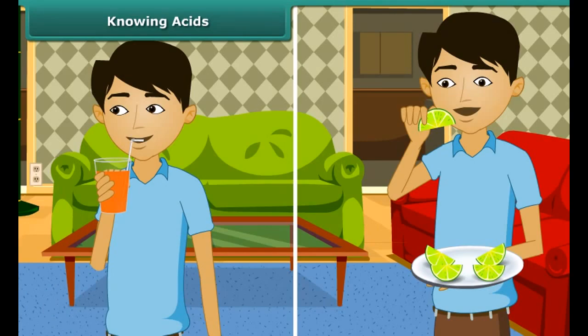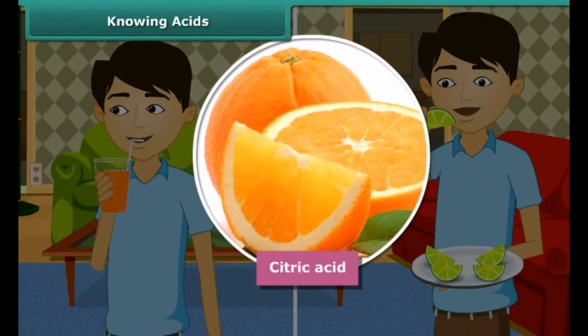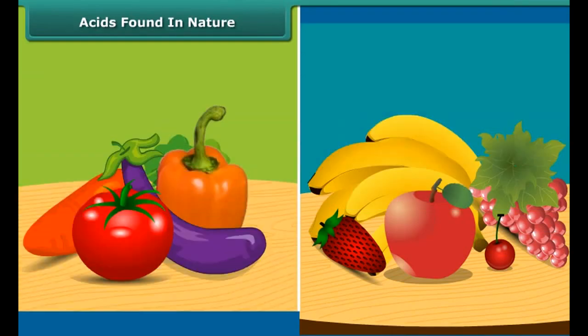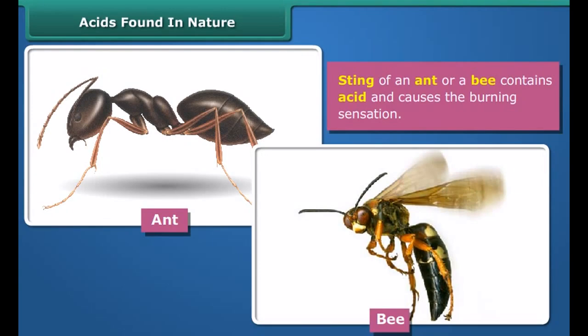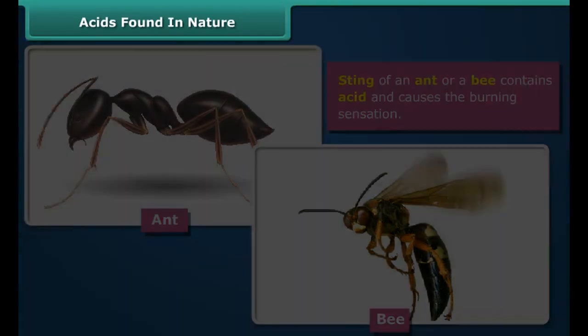Generally, sour-tasting substances contain acids. Some fruits contain citric acid, which is sour in taste. The origin of the word 'acid' is the Latin word 'acidus,' which means sour. Acid is found in natural substances like fruits and vegetables. Have you heard that the sting of an ant or a bee contains acid and causes a burning sensation?